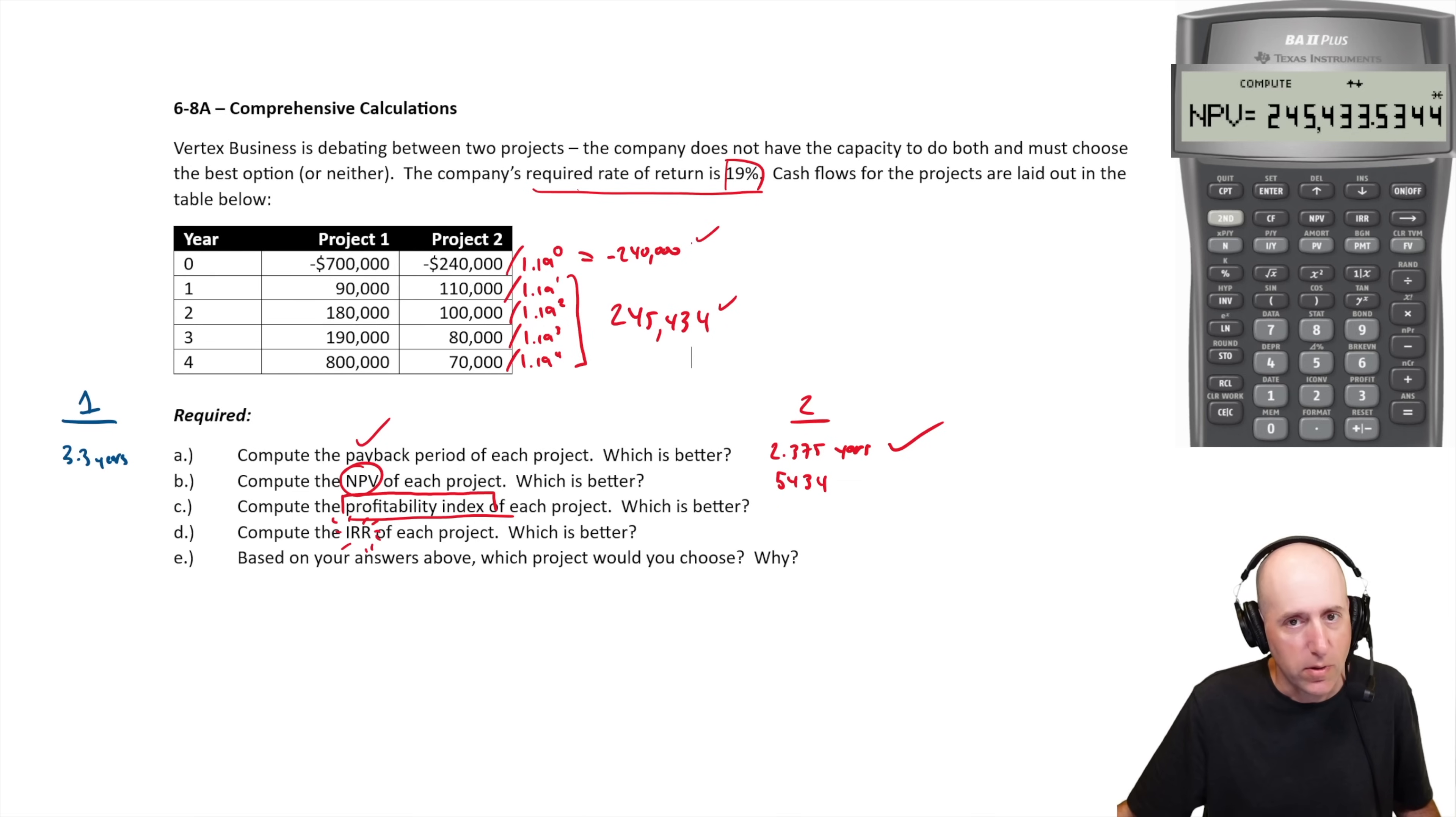Let's do the other side. So I'm just going to do the inflows again, because it's useful for profitability index in a minute. So let me clear my work here. Cash flow second function clear. So cash flow at time zero, I'm not dealing with. Cash flow at time one, 90,000. Cash flow at time two, 180. Cash flow at time three, 190. And cash flow at time four, 800. All right, so NPV, 19 is my discount rate, hit enter, down arrow, compute, NPV 714,424. That is my present value of the cash inflows.